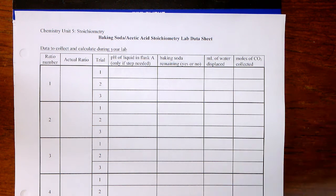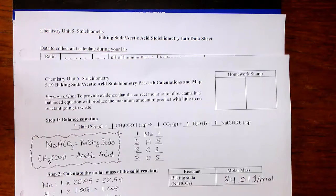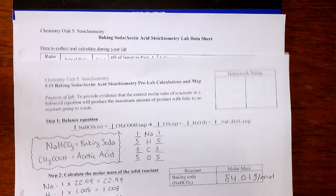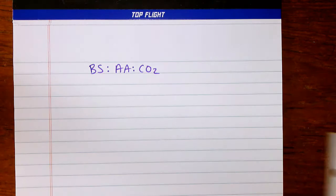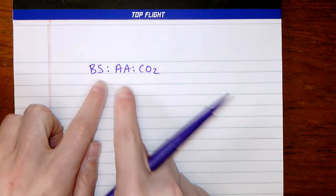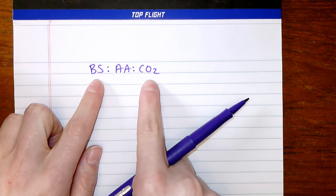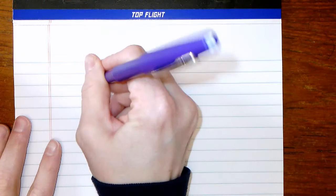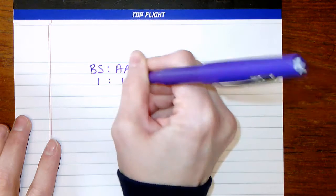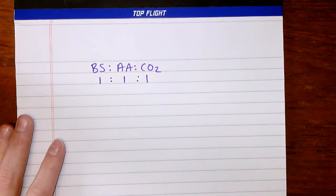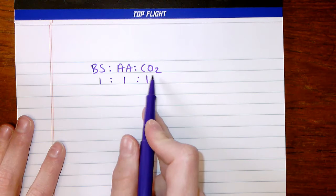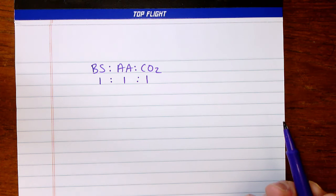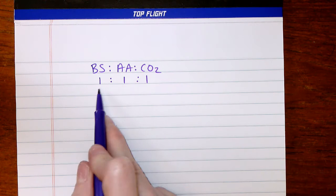To think about this, we want to look back at our balanced equation and what the coefficients in front of each compound actually mean. We have a coefficient of one in front of each compound, so we have a one-to-one-to-one ratio. BS means baking soda, AA means acetic acid, and CO2 is carbon dioxide — the product we've been measuring.